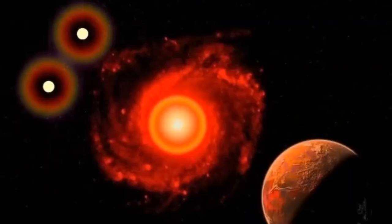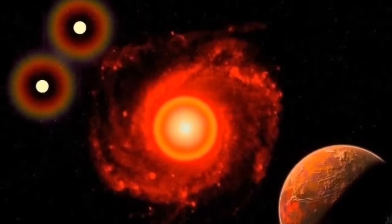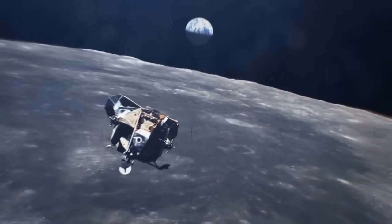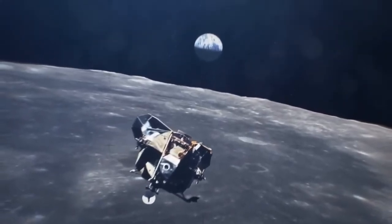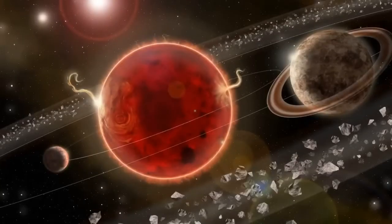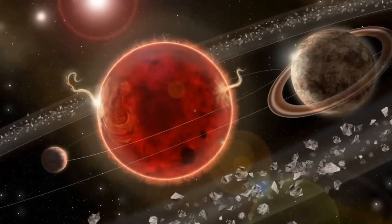However, embarking on a journey to Proxima Centauri is no walk in the park. Currently, it would take a staggering 75,000 years for a spacecraft like Voyager 2 to reach the Proxima Centauri system. Yet a nifty idea emerges: solar sails.